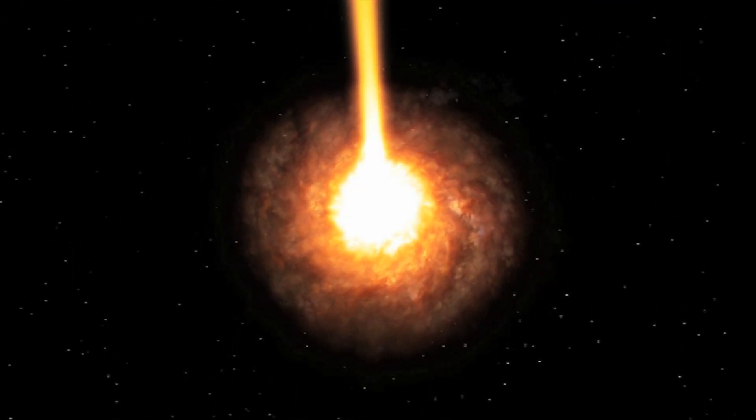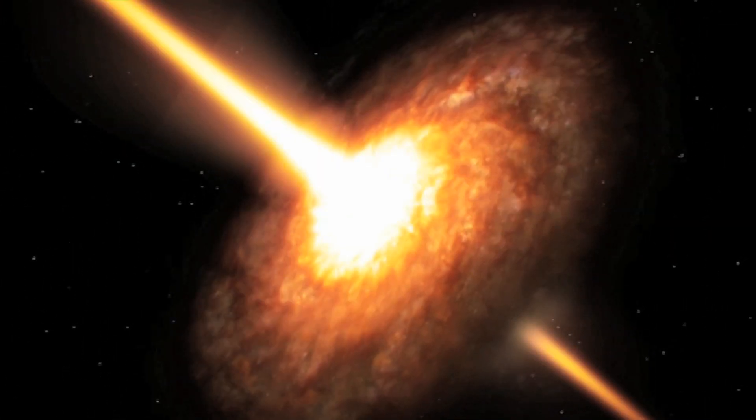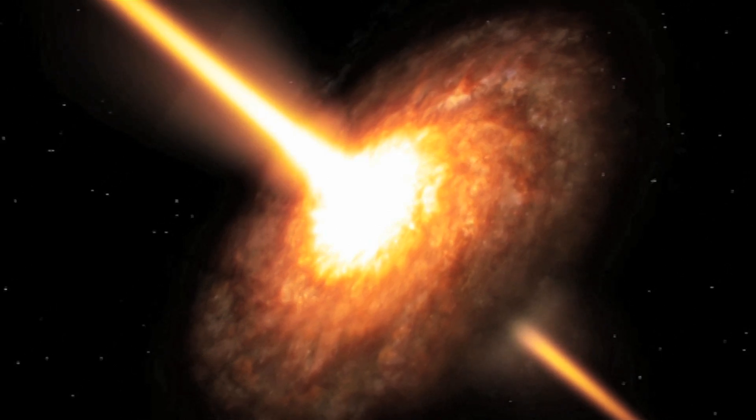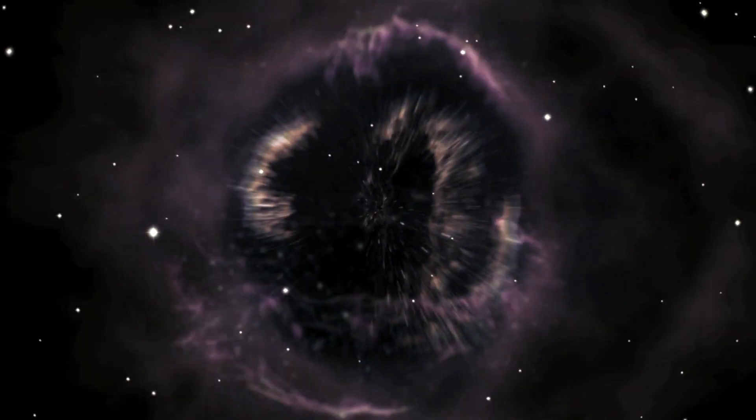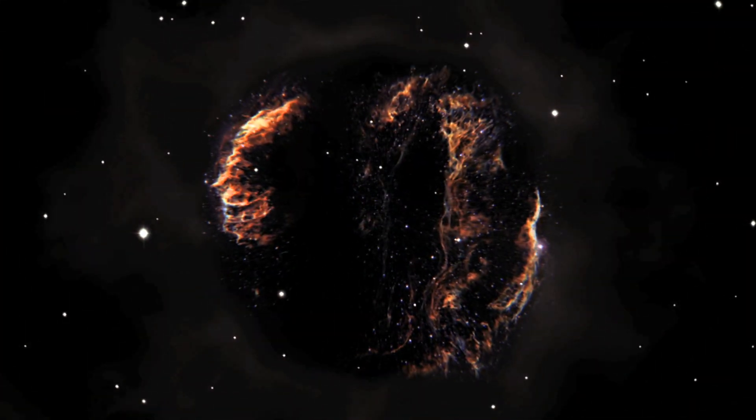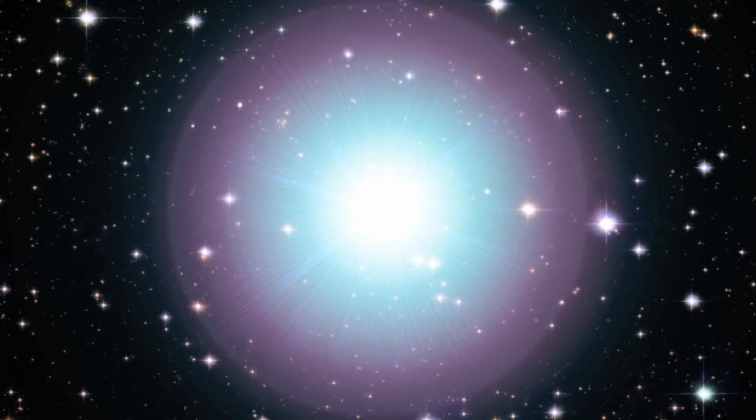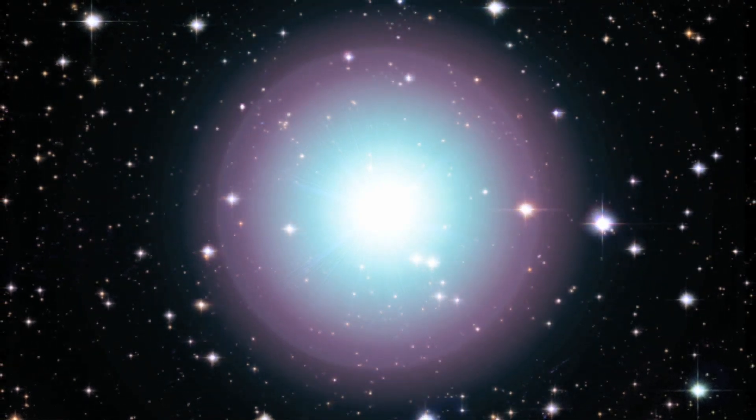Black holes come in different sizes. We've had solid evidence for the smaller ones since the 1970s. These form when a huge star explodes at the end of its life. As the outer layers are blown away, the star's core collapses in on itself, forming an incredibly dense ball.